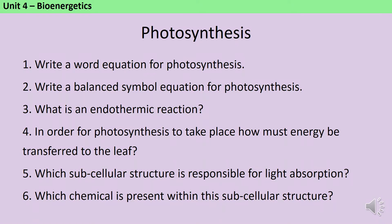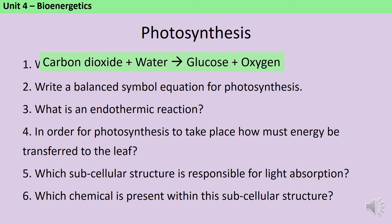The word equation for photosynthesis is carbon dioxide plus water reacts to form glucose plus oxygen. It doesn't matter which way round you place your two reactants and which way round you place your two products, but it definitely does matter what goes on the left side of the equation and what goes on the right. It's also really important that you have an arrow in the centre of the equation, definitely not an equal sign, and if the question asks for a word equation you won't get marks for giving the symbols.